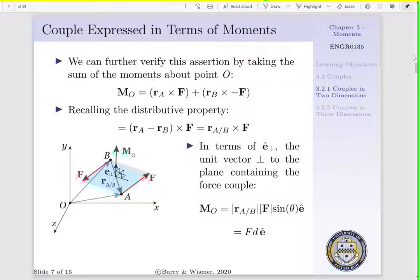Now, if that wasn't sufficient, we can further verify this assertion by taking the sum of the moments about point O. That is, our moment about point O would be equal to force F cross R_A plus our negative force, negative F cross R_B. If we recall the distributive property, we have F in both scenarios. That is, our moment of force about point O can be expressed as R_A minus R_B cross F. And R_A minus R_B is simply our position vector going from B to A. Thus, we see this reduces down to our moment about point O would be the magnitude of R_A times the magnitude of F times sine theta in the E hat direction. E hat is our unit vector that is perpendicular to the plane containing both forces. And we can say now the magnitude of our moment about point O is simply F D.